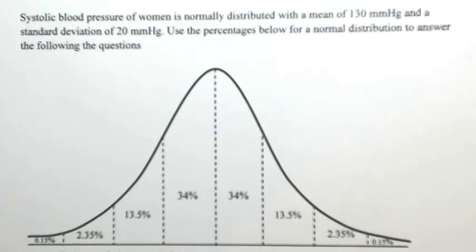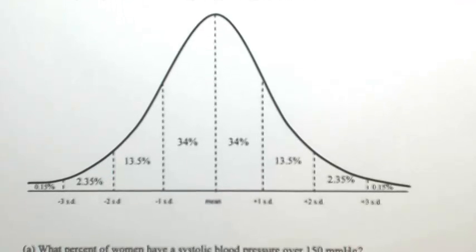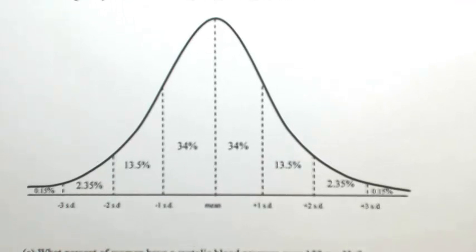Systolic blood pressure of women is normally distributed with a mean of 130 mmHg and a standard deviation of 20 mmHg. Use the percentages below for a normal distribution to answer the following questions. So these are the percentages that determine how much information is between each piece of the distribution.